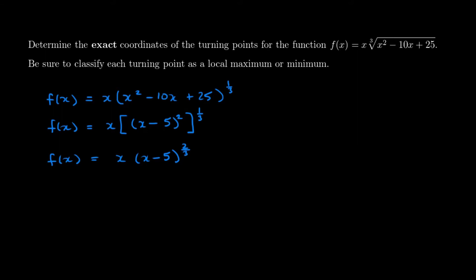So we're going to have x multiplied by x minus 5 to the power of two thirds, since x minus 5 squared raised to the one third power means we multiply the exponents. Our chain rule, when we start to set up the product rule, isn't really required anymore because our inner function is just a basic linear function. Step one will be to determine our critical values.